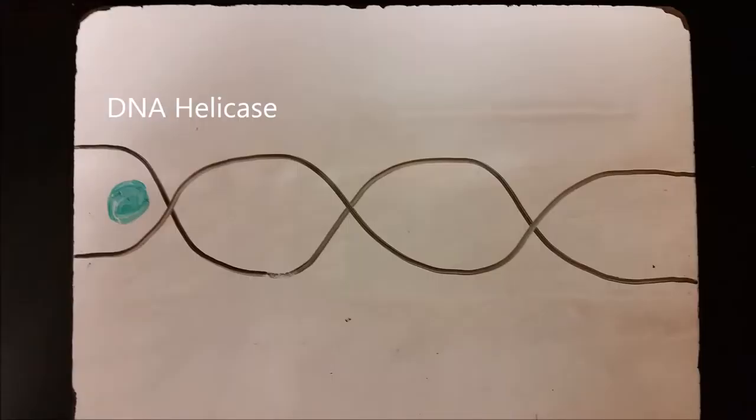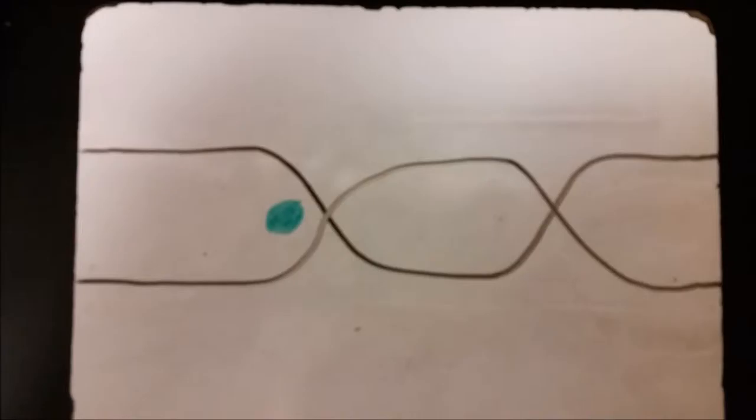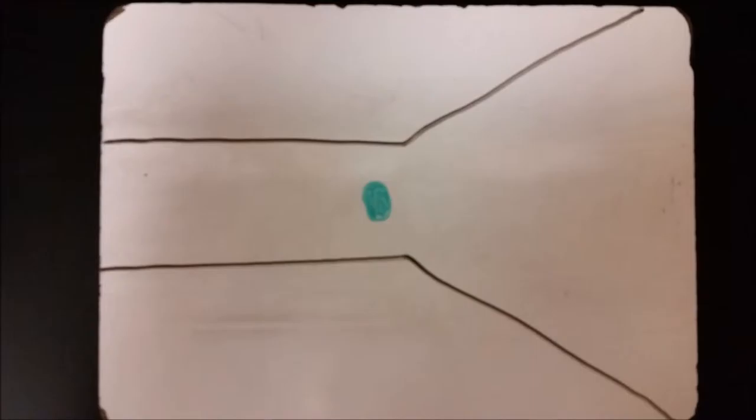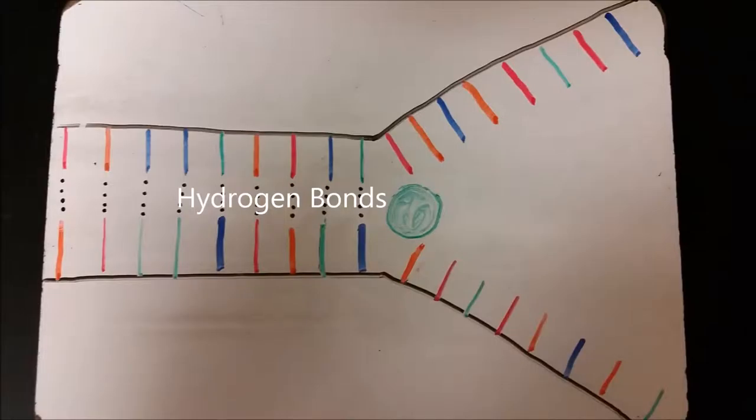The first step of DNA transcription is the DNA helicase unzipping the double helix of the DNA. It goes through splitting the hydrogen bonds so the DNA can be replicated into two identical copies of DNA, which means that the DNA is semi-conservative.